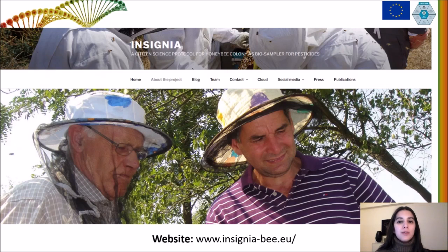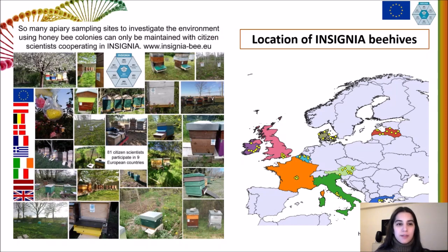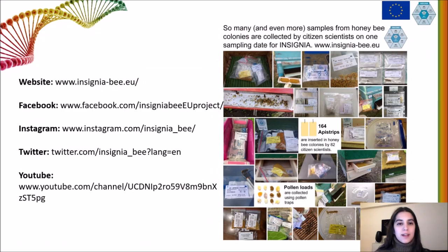INSIGNIA involves the development of a citizen science protocol for honeybee colonies as biosamplers for pesticides. Eight citizen scientists from across nine European countries collected pollen samples bi-weekly between April and September of 2020 from traps placed in front of beehives. These beehives were located in different land uses to provide a contrasting range of expected pesticide exposure and plant diversity. Over 810 mixed pollen samples were collected in 2020 and analyzed for pesticides by the INSIGNIA team from the University of Almeria, as well as for botanical origin by our team at CIMU.